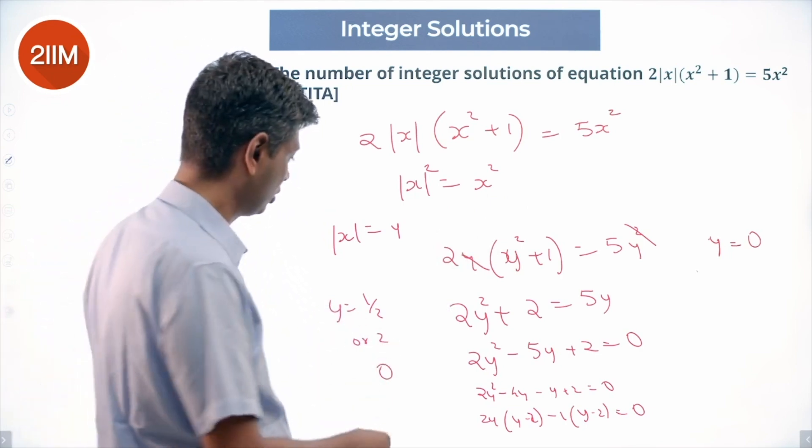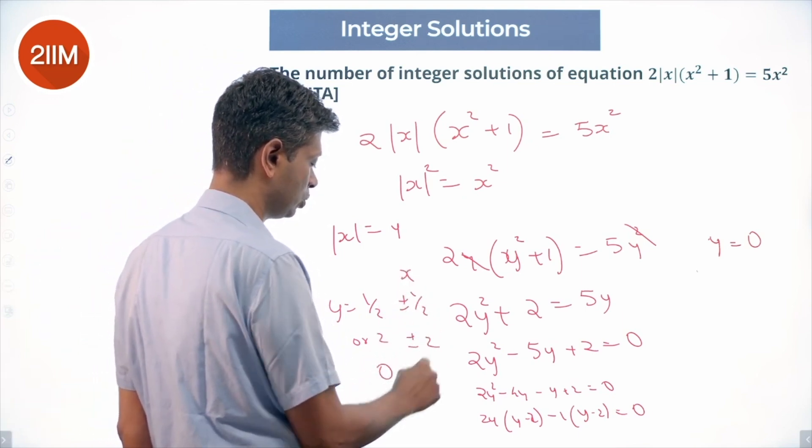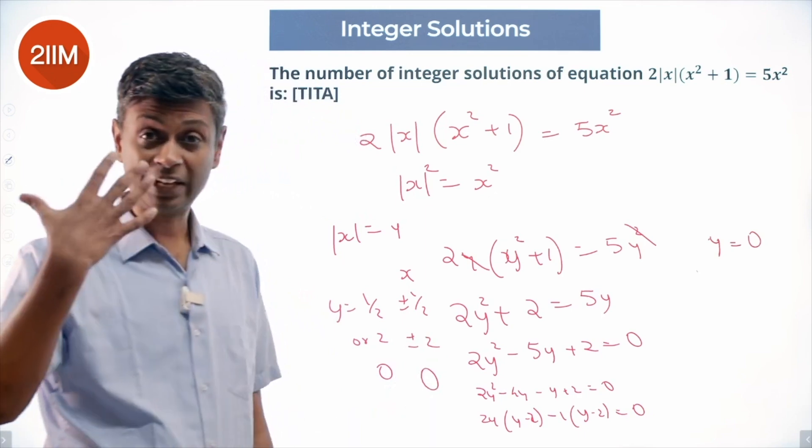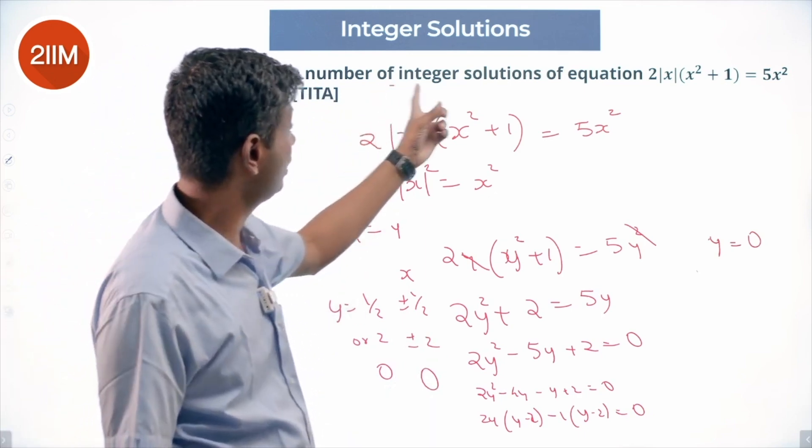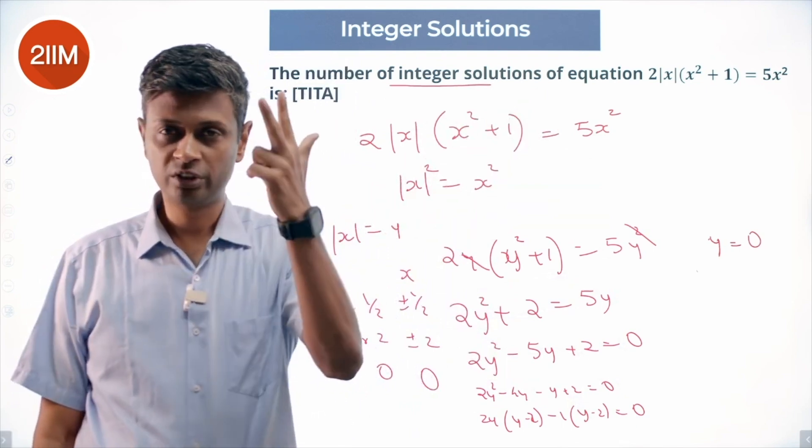So x could be plus or minus... half won't work. Minus 2, plus 2, and 0. Three different values. So three values of x work.